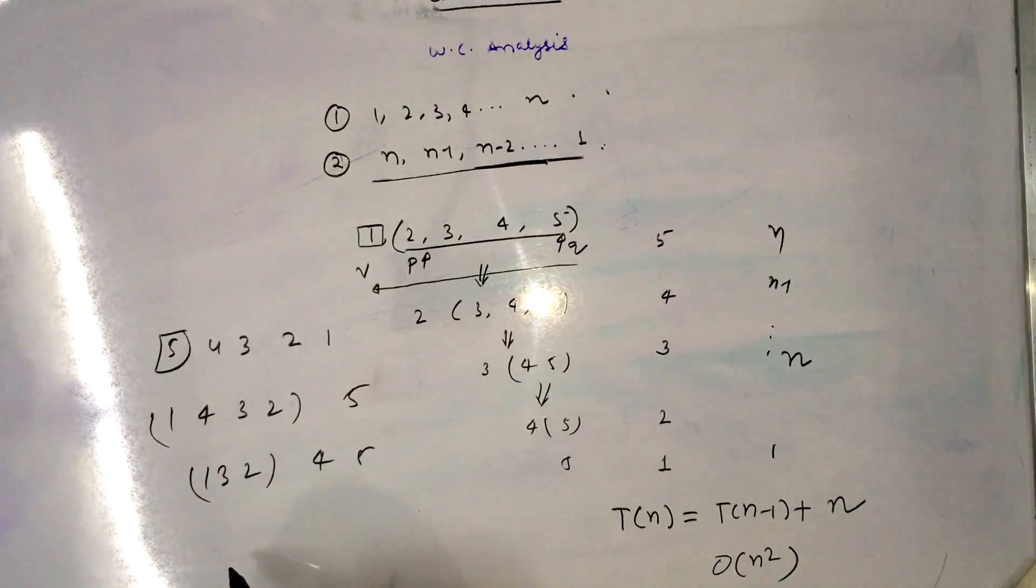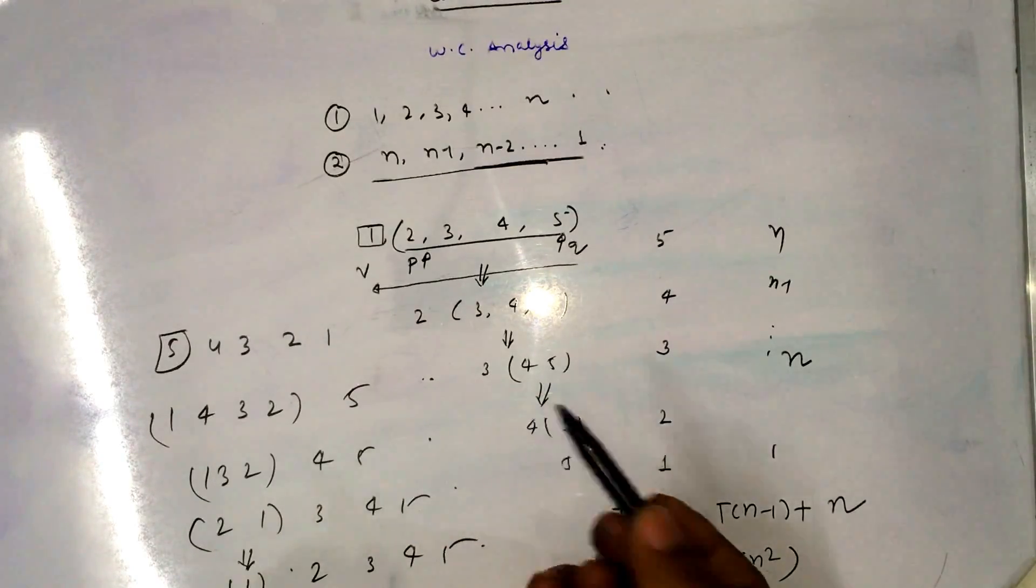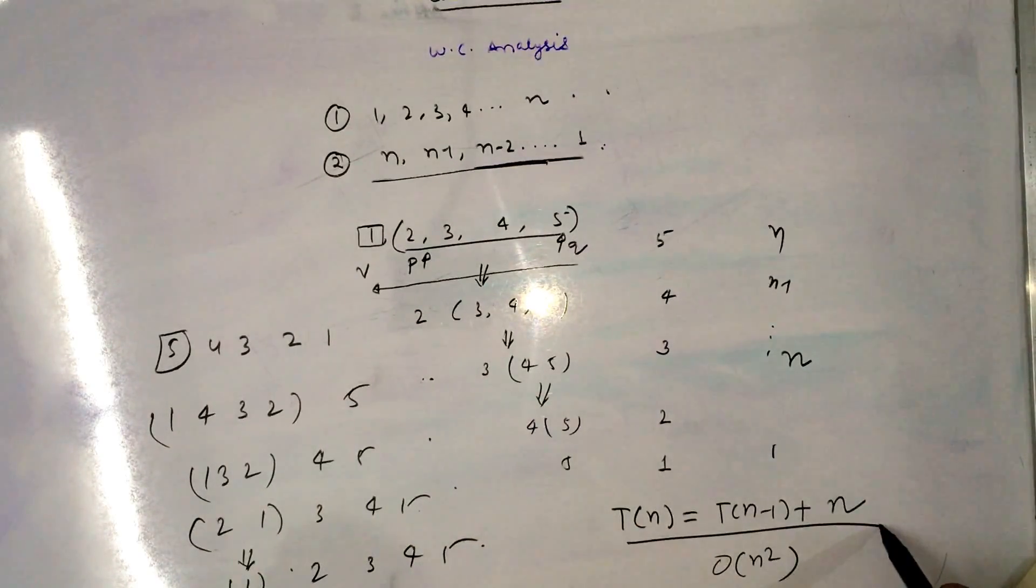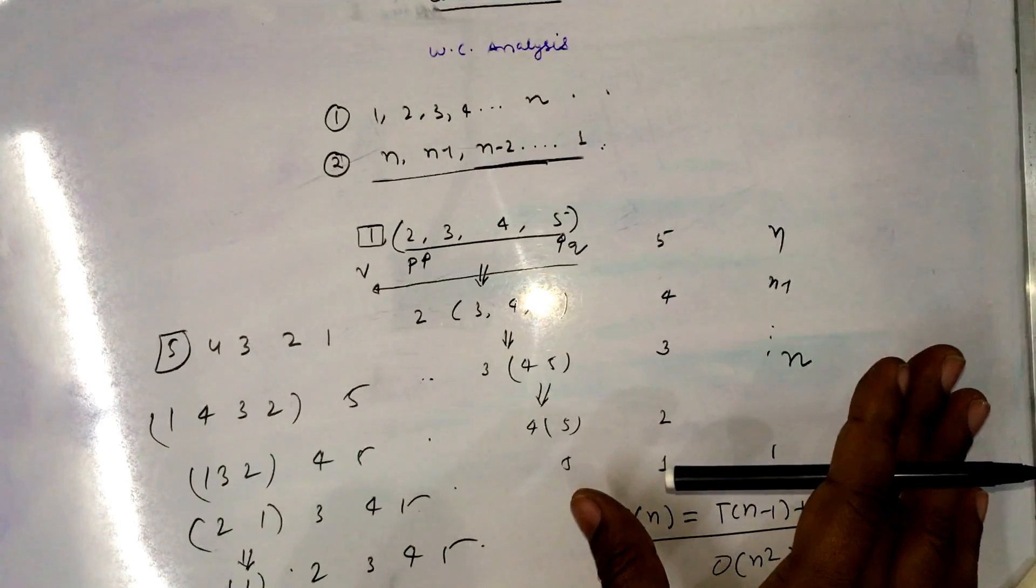And this would be divided into 2, 1, 3, 4, 5. This would be next problem, then it is 1 and sub problem and 2, 3, 4, 5. Then 1 is written as 1. So same number of 5 number of comparisons, then 4, 3, 2, and the recurrence relation is T(n) is equal to T(n-1) plus n and it is considered as order of n square. So this is the worst case.